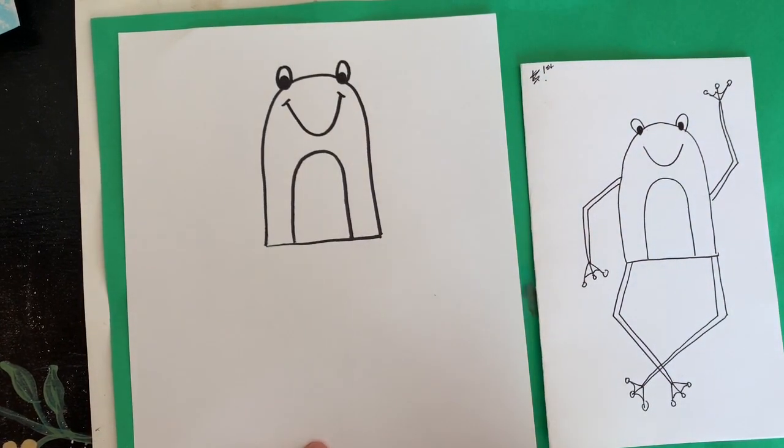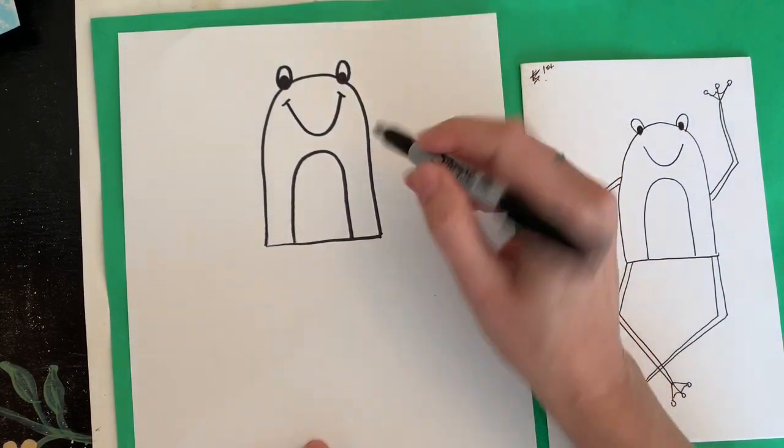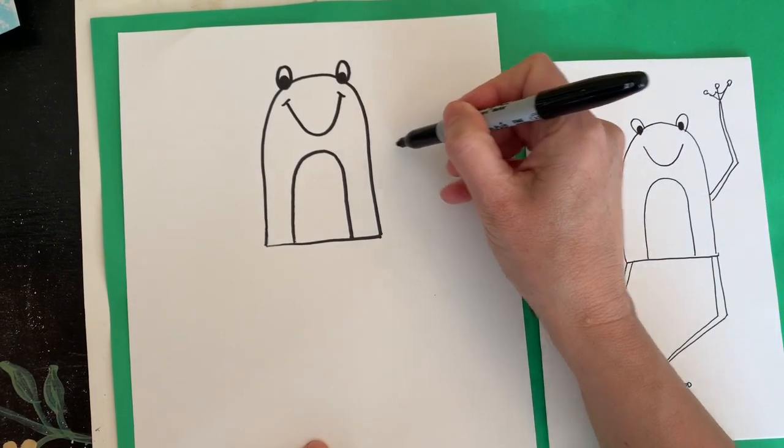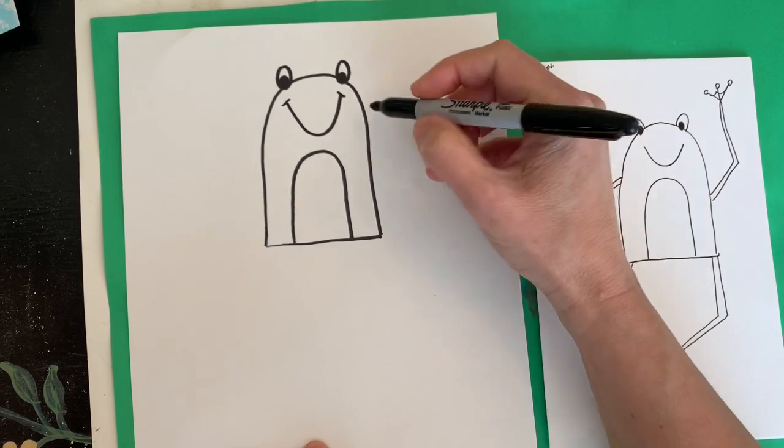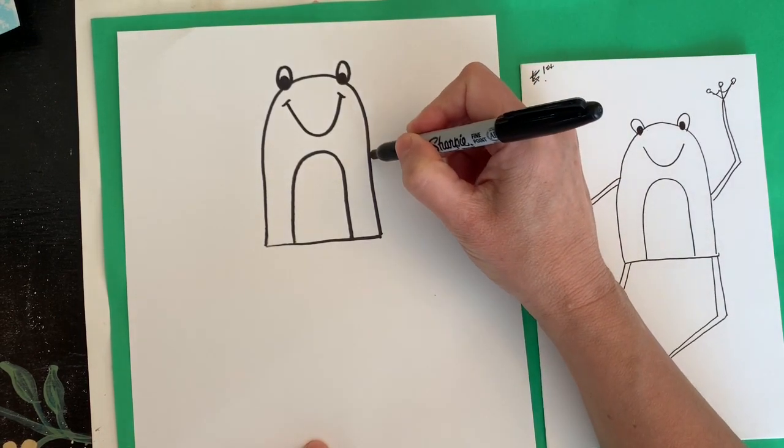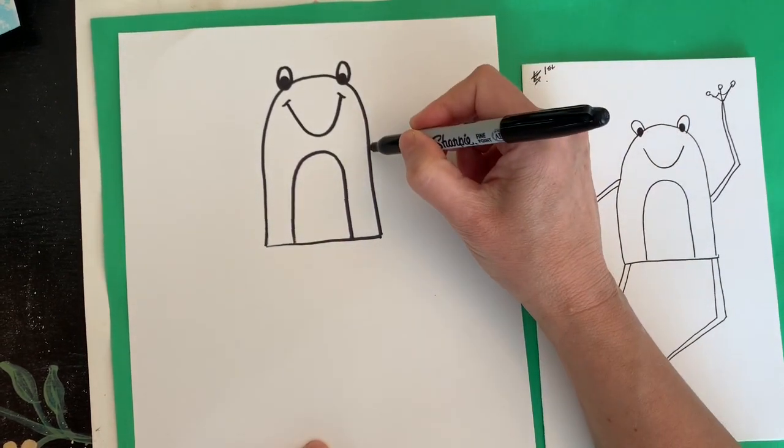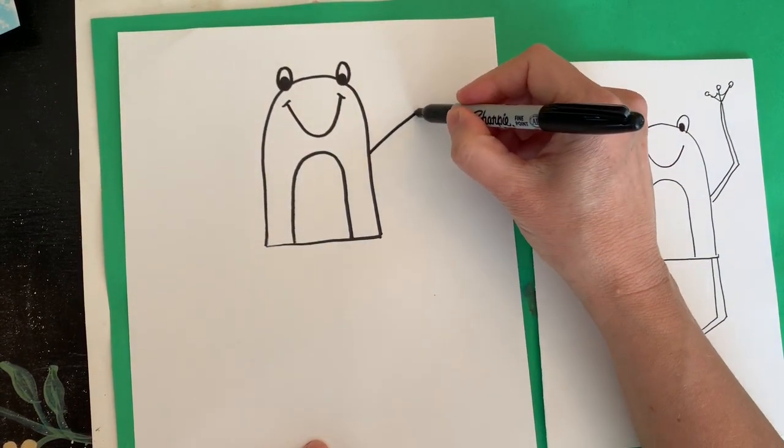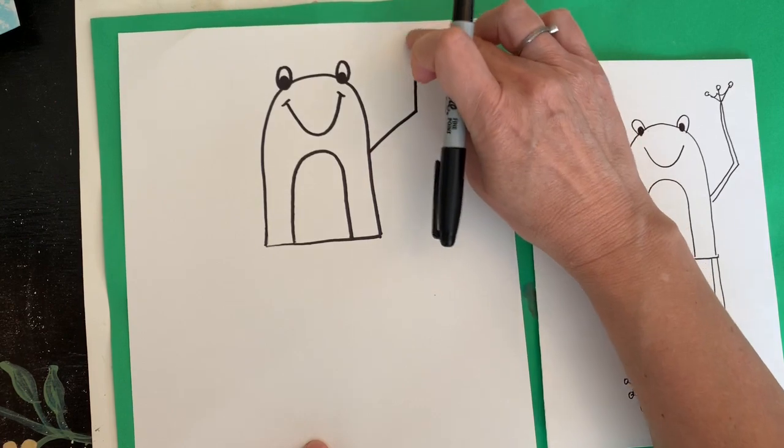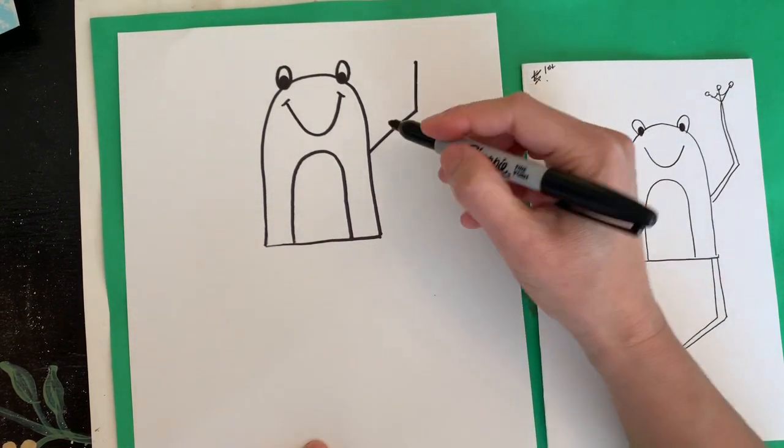I think I'm going to do the arms first. I have mine waving. You can make yours go straight out, you can make them go down, you can make them any way you want. I made mine bent at the elbow. Right about in the middle of the body, you just do a shape like this. Don't put it right toward the end because that's where his paw is going to be.